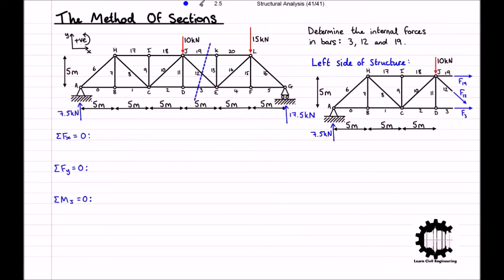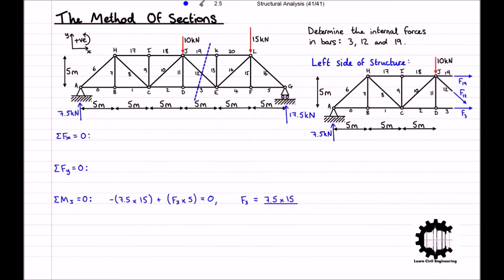Considering only the left part of the structure and taking anti-clockwise rotation as positive, the sum of all moments relative to node J equals negative 7.5 times 15 plus F3 times 5, which equals zero. We chose node J because F19 and F12 both pass through it and therefore do not cause a moment, leaving only one unknown. Solving for F3: F3 equals 7.5 times 15 divided by 5, which equals 22.5 kilonewtons. Since F3 is positive and we assumed tension, bar 3 is under tension with a magnitude of 22.5 kilonewtons.